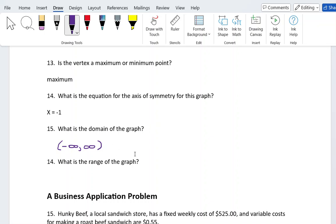When we're asking what is the domain of the graph, for any parabola, this is always going to be the domain. Now, that's not true for any graph at all, but for any parabola, my domain is going to be negative infinity to positive infinity.